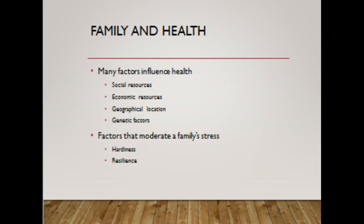Family and health: multiple factors influence the health of a family, including social resources, economic resources, geographical location, and genetic factors. Family is the primary social context in which health promotion and disease prevention takes place. Some families do not place a high value on good health. Genetic factors reflect the family's heredity or genetic susceptibility to a disease. Hardiness and resiliency are factors that moderate a family's stress. Family hardiness is the internal strengths and durability of the family unit. Resiliency helps evaluate healthy responses when individuals and families are experiencing stressful events.